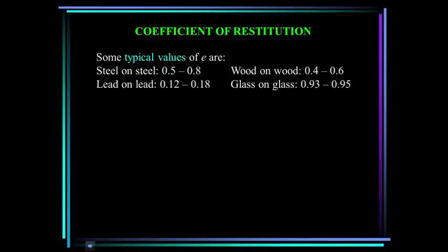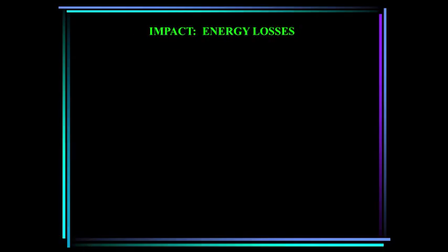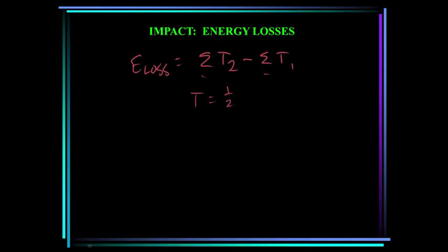Here are some typical values of E: steel on steel is 0.5 to 0.8; lead on lead is 0.12 to 0.18; wood on wood is 0.4 to 0.6; and glass on glass is very high at 0.93 to 0.95. Once the particles' velocities before and after the collision have been determined, we can calculate the energy loss based on differences in kinetic energy. The energy loss equals the sum of kinetic energies after impact minus the kinetic energies before impact, where kinetic energy is one-half mv squared.